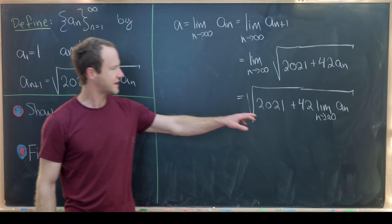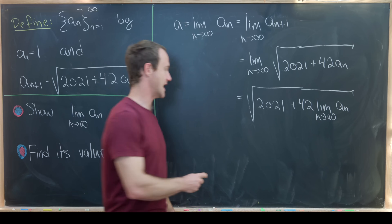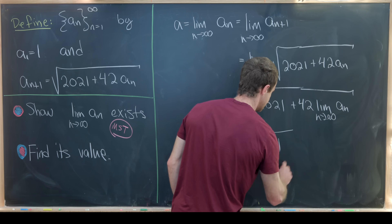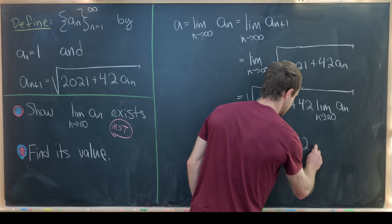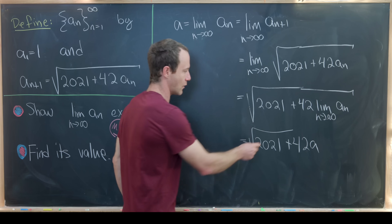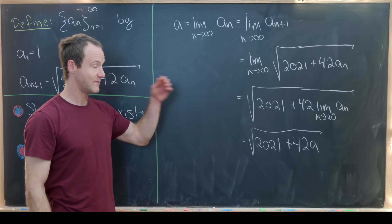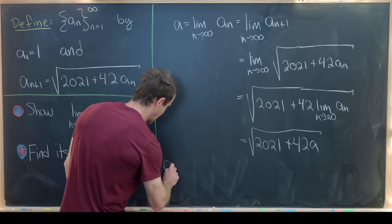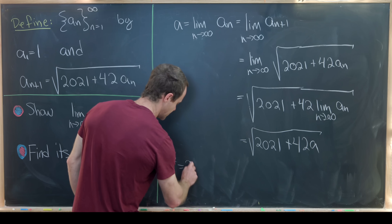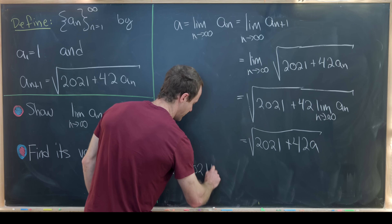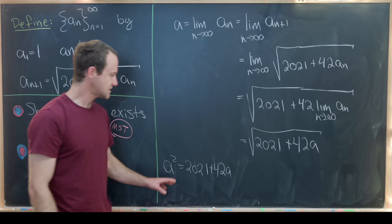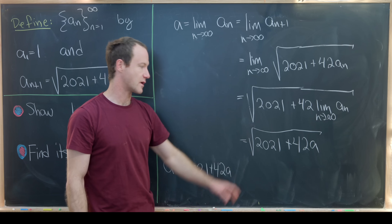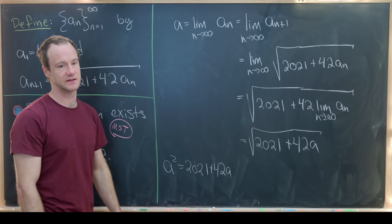Bringing the limit inside gives us the square root of 2021 plus 42 times the limit of a_n, which we assumed equals a. So we get a equals the square root of 2021 plus 42a. Squaring both sides gives a² equals 2021 plus 42a, canceling the square root.